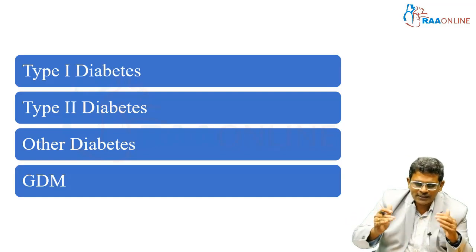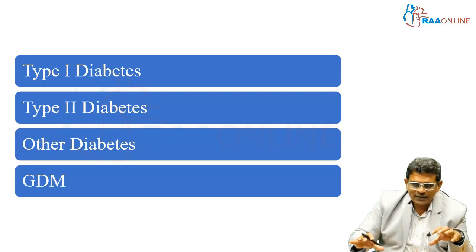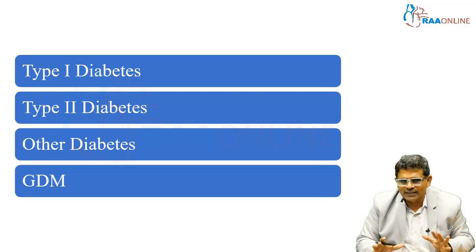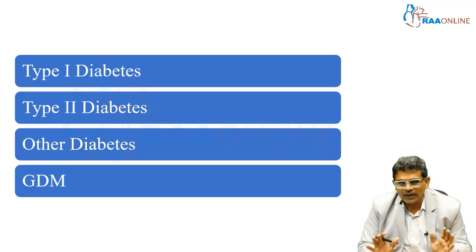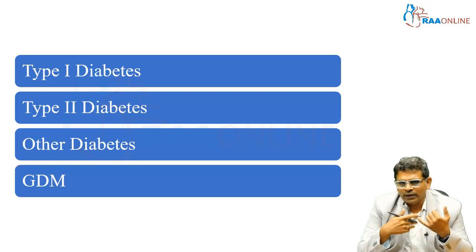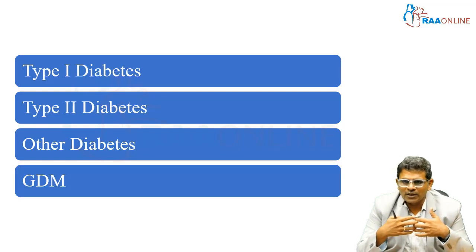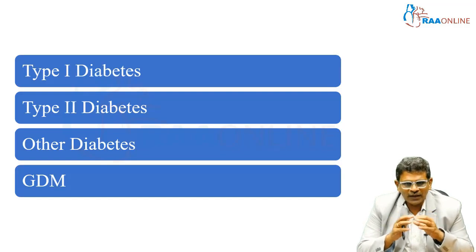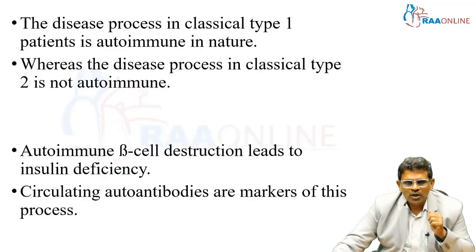ADA is very clear: Type 1 diabetes, Type 2 diabetes, other specific types of diabetes, and GDM. The patient should belong to one of these classifications. The 'other diabetes' category may include uncommon types such as pancreatic diabetes, diabetes due to cystic fibrosis, MODY, neonatal diabetes, or drug-induced diabetes. All these fall under 'other diabetes' in the ADA framework.